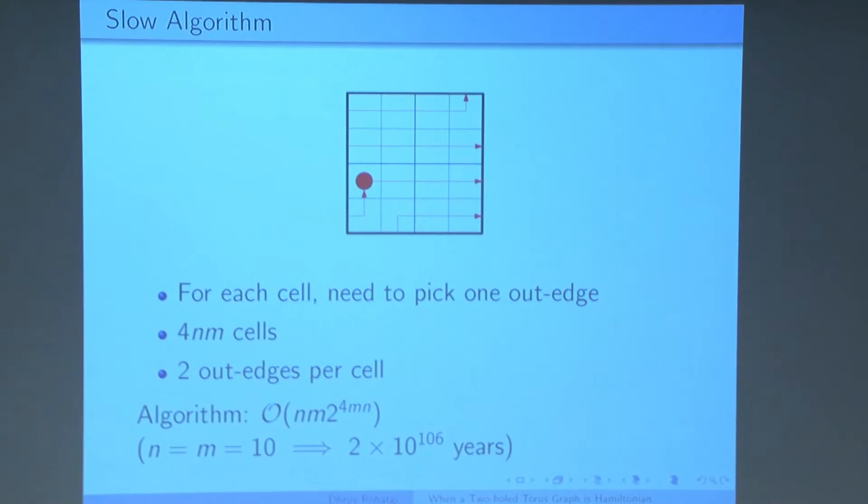But there are four NM cells, and there are two ways to choose a direction for each of them. So we get an algorithm that for a 10 by 10 grid will take 10 to the 106 years, approximately, if you have a pretty fast computer. And I don't think I want to wait this long. So let's try to make a faster algorithm.